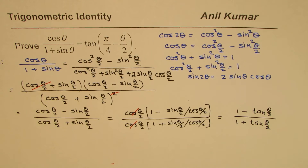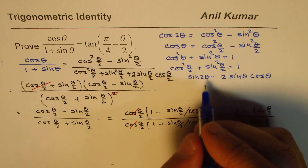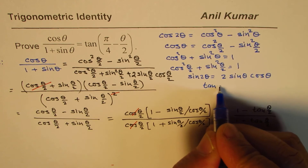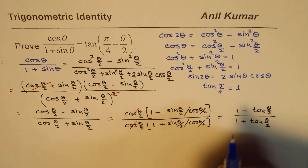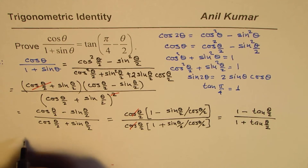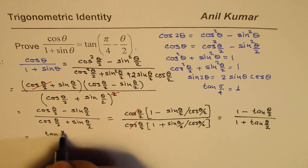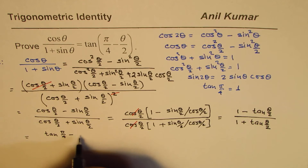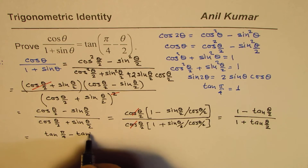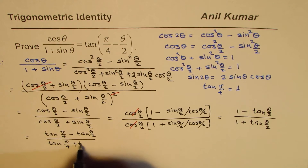Now we look at the term π/4. Since tan(π/4) equals 1, we can replace the 1s in the expression with tan(π/4). So we write: tan(π/4) minus tan(θ/2) over tan(π/4) plus tan(θ/2).